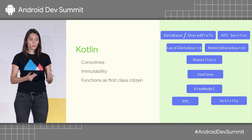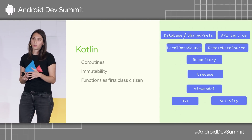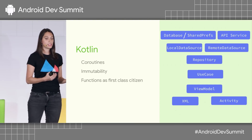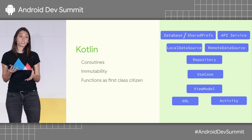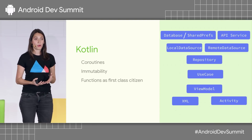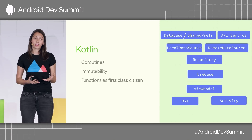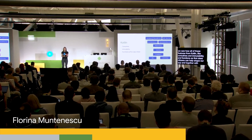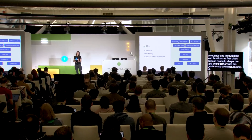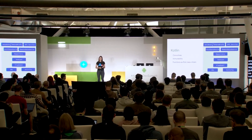Overall, we saw how all of these features from Kotlin — like coroutines, immutability, and functions as first-class citizens — can help us shape our app. And together with the guide to app architecture, help us build this maintainable, safer, and faster-to-develop architecture that we wanted to have. Thank you.